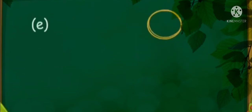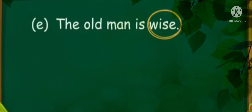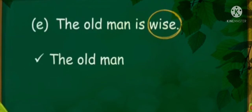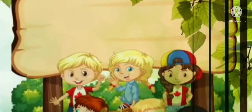Opposite of 'full' is 'empty.' Now: 'The old man is wise.' The opposite of 'wise' is 'foolish,' so: 'The old man is foolish.' Did you understand, children?